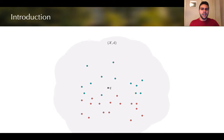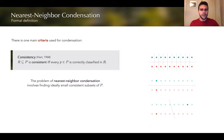The nearest neighbor rule is one such classifier that finds the nearest neighbor in the training set to that query point and assigns the class of that nearest neighbor to the query point. In this context, the nearest neighbor condensation problem aims to reduce the training set that is used for classification without affecting its accuracy.